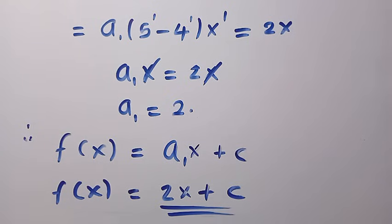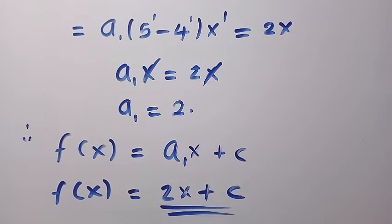We can verify by substituting f(x) = 2x + c back into the original equation to confirm the left-hand side equals the right-hand side. Thanks for watching — don't forget to subscribe. If you have another method, drop it in the comments. See you in the next video!